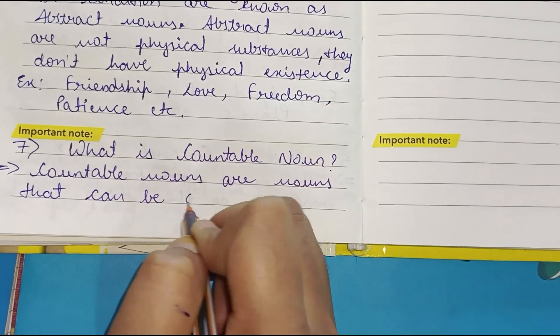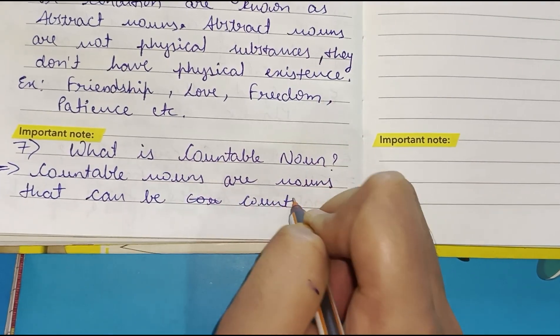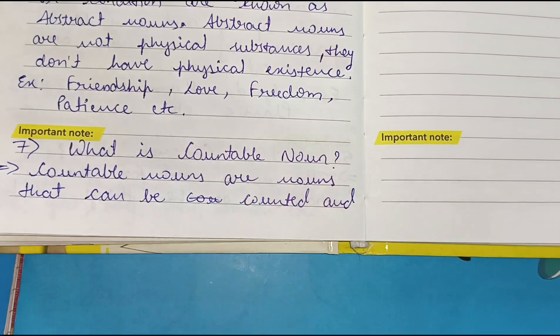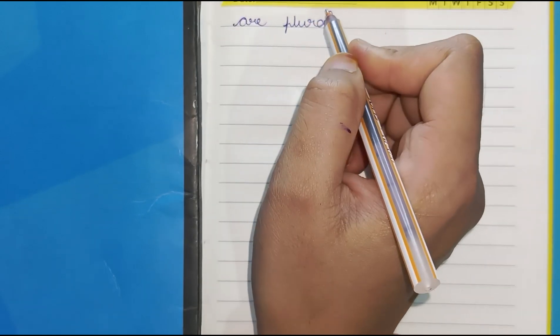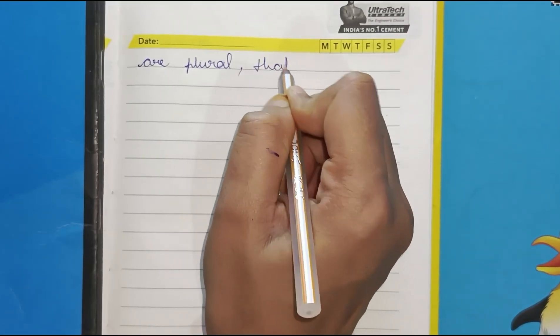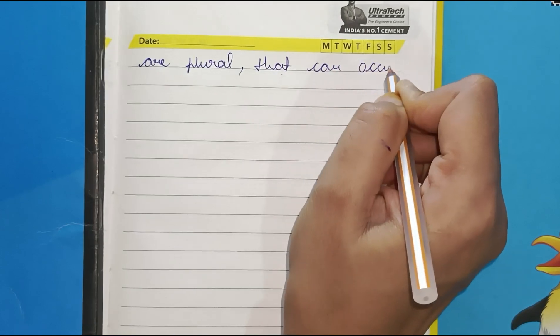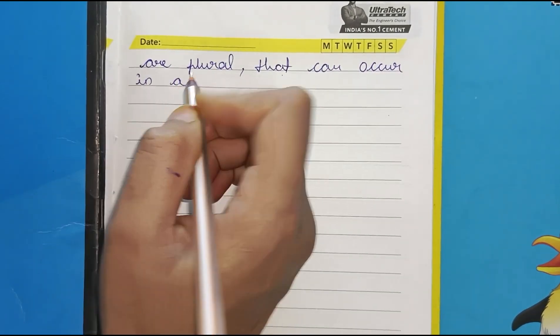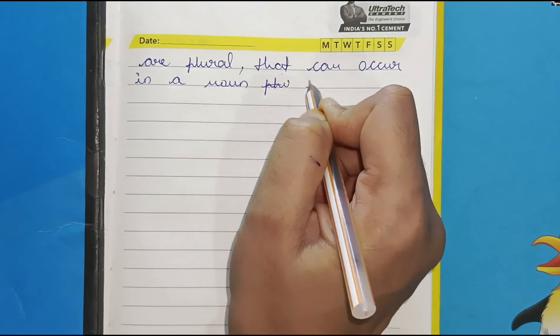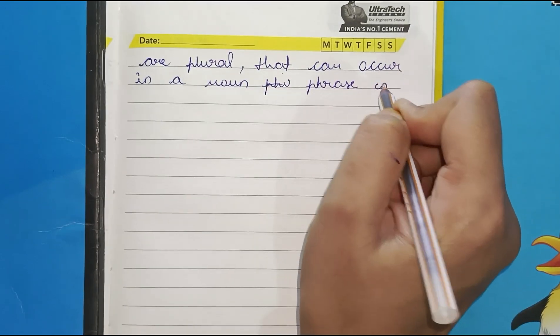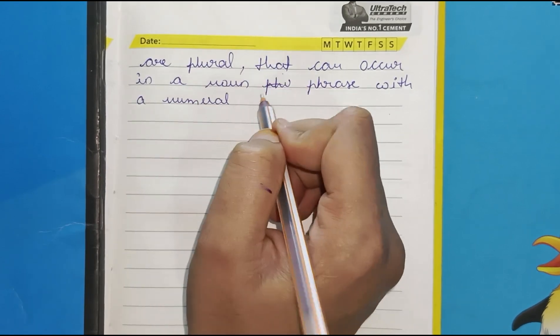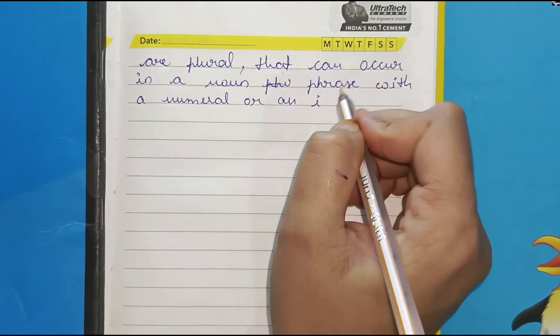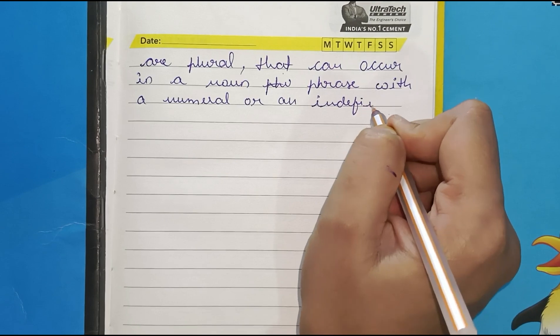Countable nouns are nouns that can be counted and are plural that can occur in a noun phrase with a numeral or an indefinite article.